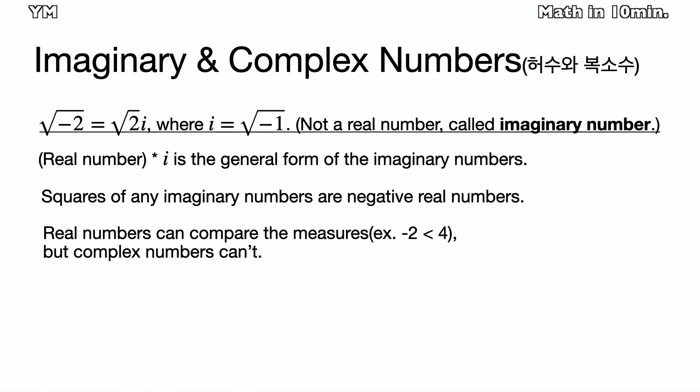Now, let's see what the imaginary and complex numbers are. Square root of negative 2 is equal to square root of 2 times i, where i is equal to square root of negative 1. Remember that any real number times i is the general form of the imaginary numbers.